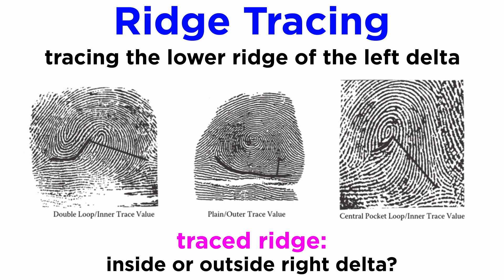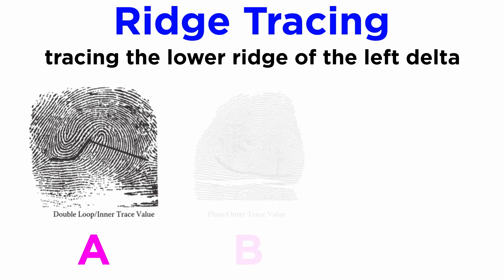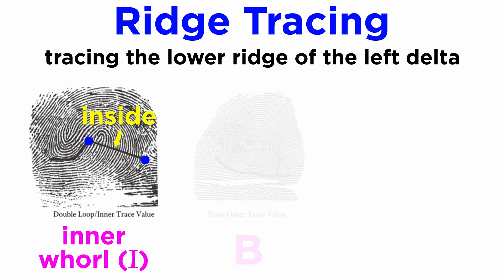Let's understand this concept by looking at a few fingerprint patterns. In fingerprint pattern A, the course of the ridge is followed from the left delta towards the right delta. This traced course of the ridge appears to lie inside the right delta. All the ridges intervening between the traced ridge and the right delta are then counted. If this ridge count is three or more than three, the ridge tracing is considered to be inside, and the pattern is described as an inner whorl, denoted with a capital I. In this particular pattern, there are more than three ridges between the traced ridge and the right delta, which is why pattern A is an inner whorl.